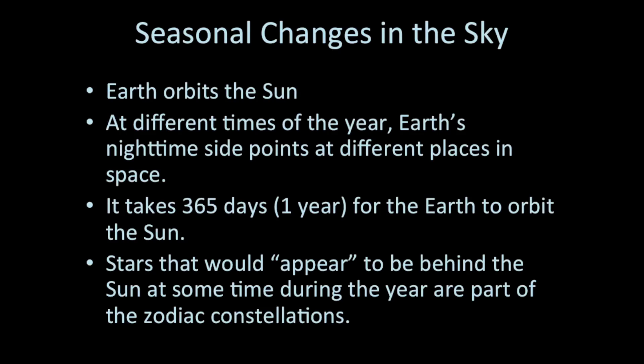So the Earth orbits the Sun, and at different times of the year, Earth's nighttime side points to different places in space. How long does it take to go all the way around one time in its orbit? Well, you probably know one year is 365 days, and that's one orbit around the Sun.